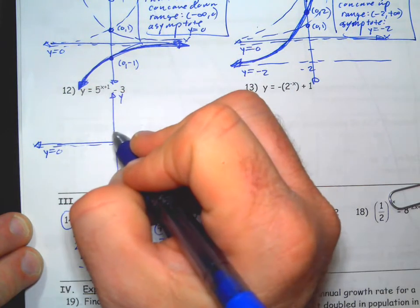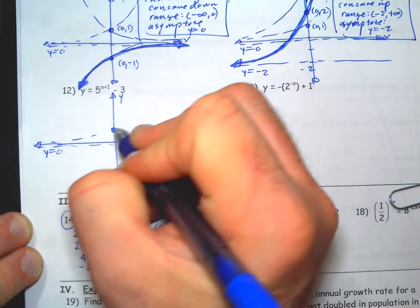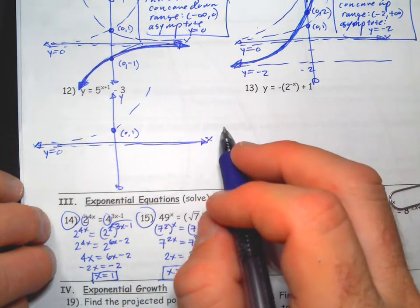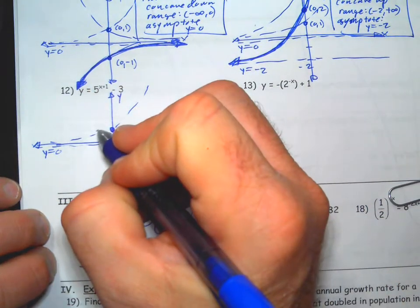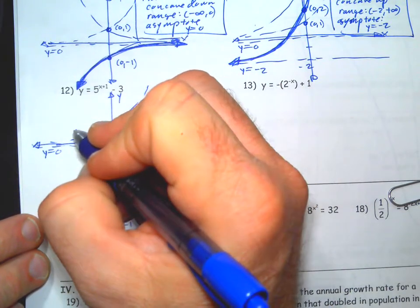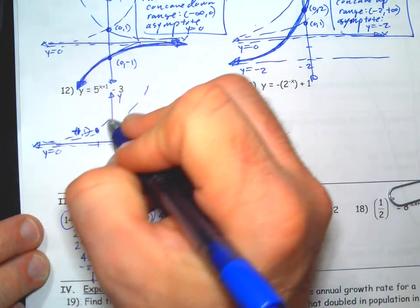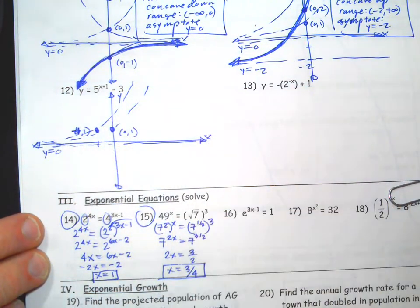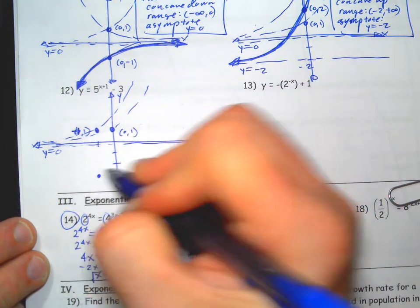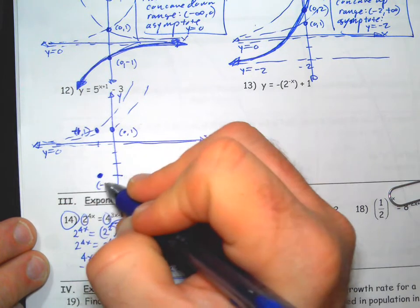Let's see, next one. Parent function. That's pretty much y equals five to the x. The plus one on the inside moves it left one point. Now it's not a y-intercept anymore, but I do want you to keep track of it, so it's at negative one one - that's the point I want you to keep track of. I don't need the new y-intercept, it's messy. Then the minus three is going to move everything down three, so we keep track of what was the original y-intercept - it is now negative one negative three.